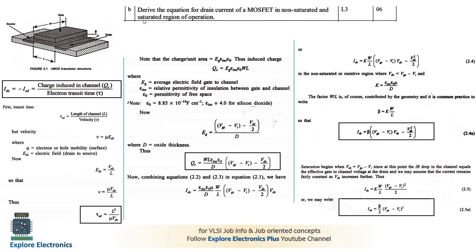The next question is: derive the equation for drain current of a MOSFET in non-saturated and saturated regions. This is a very important and frequently asked question. The derivation begins by expressing IDS = QC / t_transit, where QC is the charge induced in the channel and t_transit is the electron transit time. Transit time t = L / v, where v = μ·E_DS = μ·VDS / L, giving t = L² / (μ·VDS).